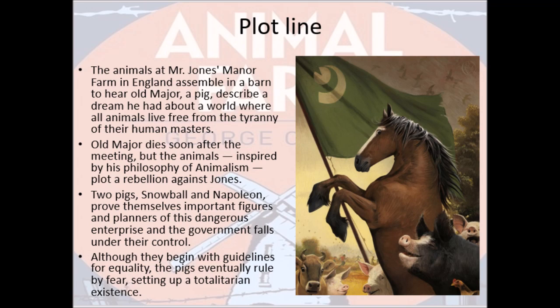Moving on to the summary: the novel is set in England where Mr. Jones's Manor Farm is located. Mr. Jones treats his animals very cruelly. One night, all the animals gather to hear Old Major, the oldest pig, who describes a dream about a world where all animals live free from the tyranny of their human masters. Though Old Major dies soon after the meeting, the animals, stirred by his philosophy of Animalism, plot a rebellion against Mr. Jones.